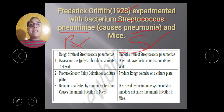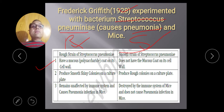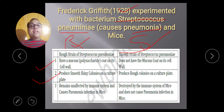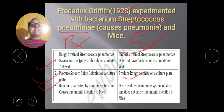R is called the rough strain and S is called the smooth strain. The rough strain has a mucus coat on its cell wall, while the smooth strain does not have the mucus coat on its cell wall.